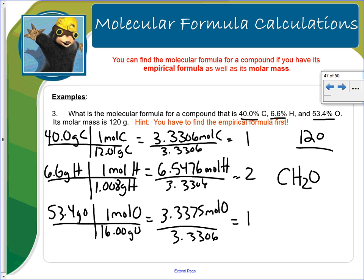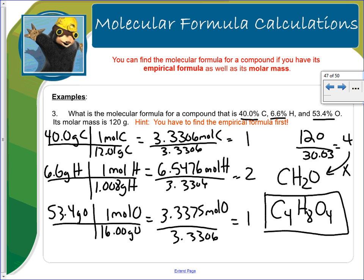Now find the molecular formula. The molar mass of CH2O is 30.03 g/mol. Divide 120 by 30.03 to get approximately 3.99, which rounds to 4. Multiply each subscript by 4: carbon becomes 4, hydrogen becomes 8, oxygen becomes 4. The molecular formula is C4H8O4.